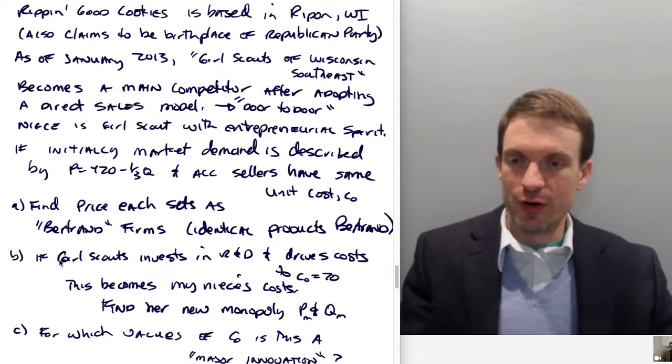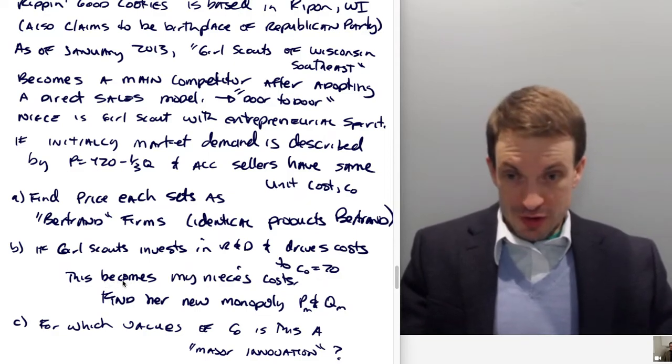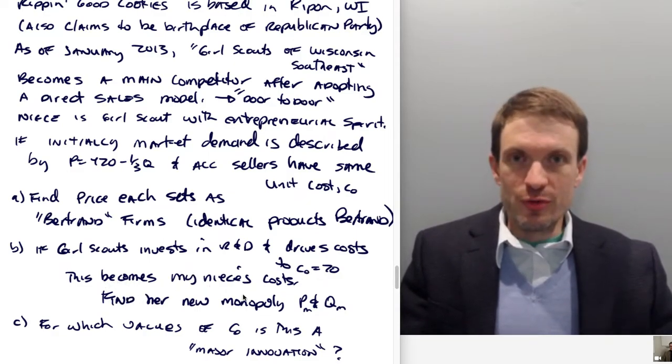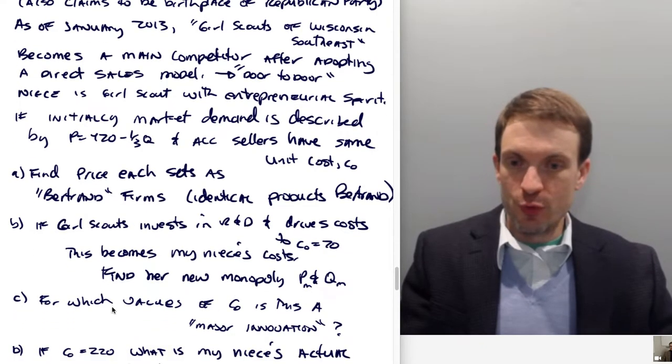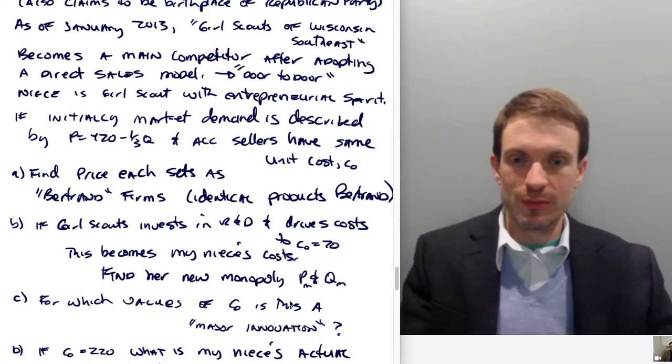If Girl Scouts invests in R&D and drives costs down to $70, this becomes my niece's costs. Find her new monopoly price and quantity. For which values of C₀ is this a major innovation? How low does the cost have to fall for this to be a large innovation?